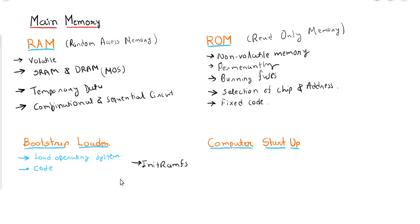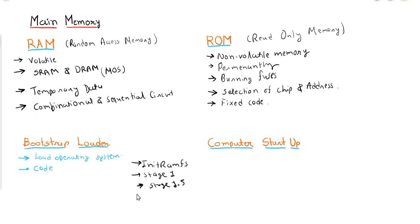Initially, the initramfs (init RAM file system) is loaded into RAM, which checks various peripheral devices, CPU status, and memory status. After that, there is Stage 1 file system, then Stage 1.5 file system, then Stage 2 file system, and then the operating system is loaded.